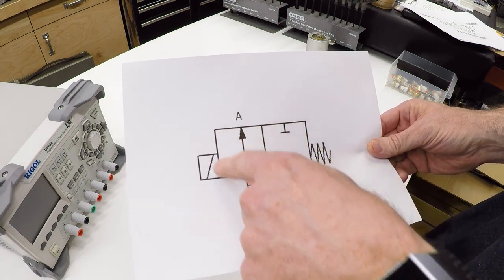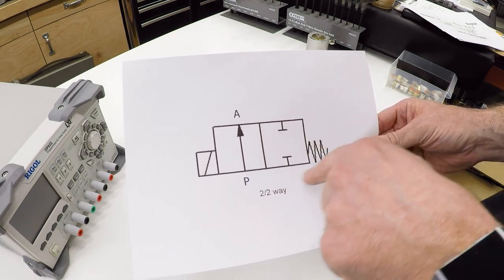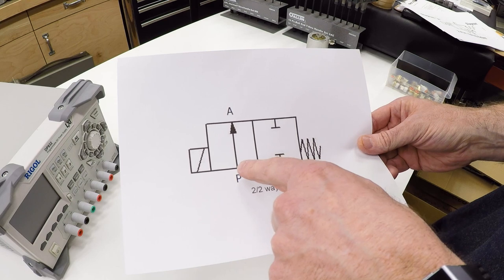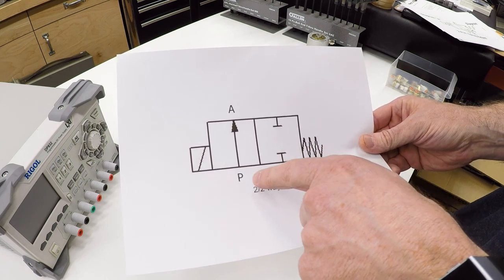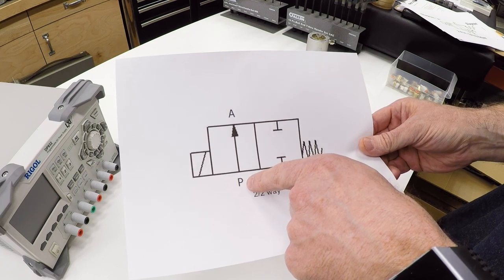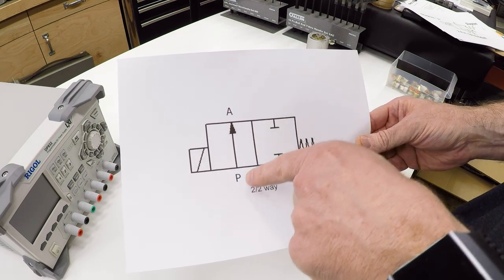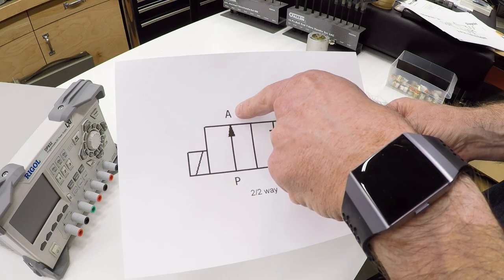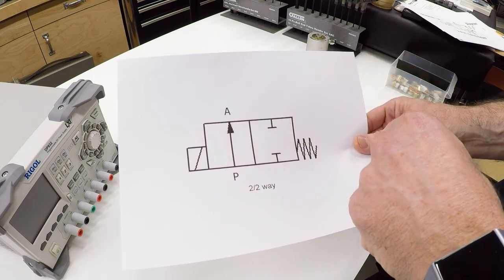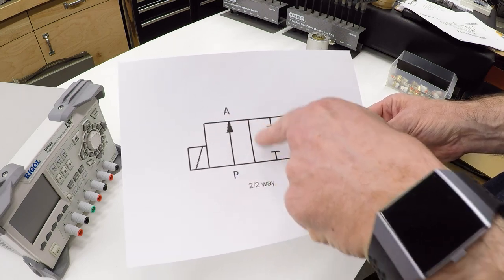This is a diagram for a 2-2 valve. The first thing to note is there are two boxes, and these two boxes denote the two different states that the valve can be in. There's two ports, one labeled P and one labeled A. P is the pressure inlet usually, and A is usually the first output, or in this case the only output.